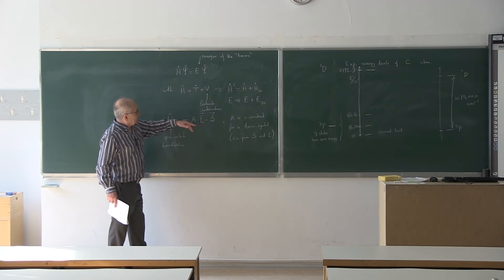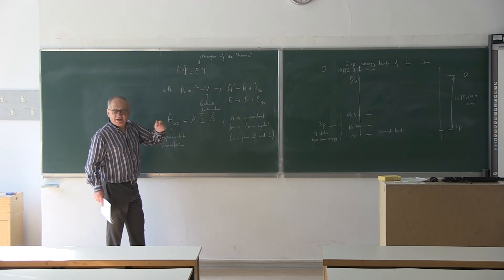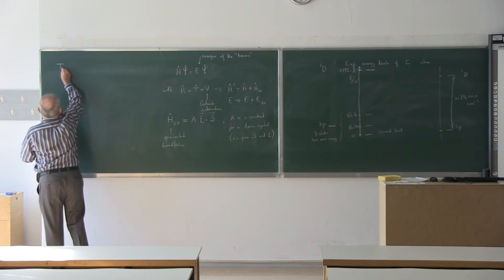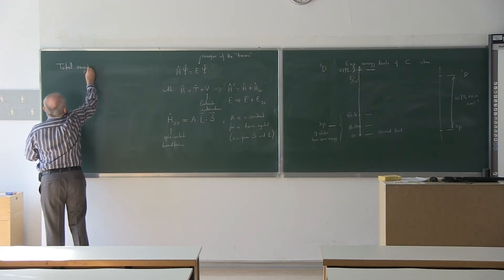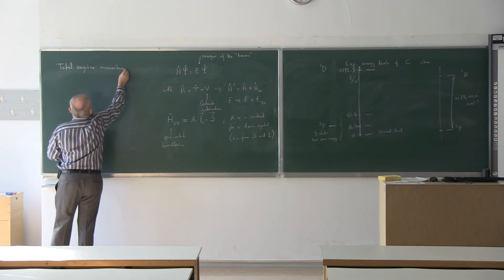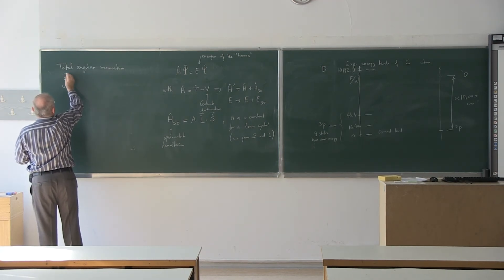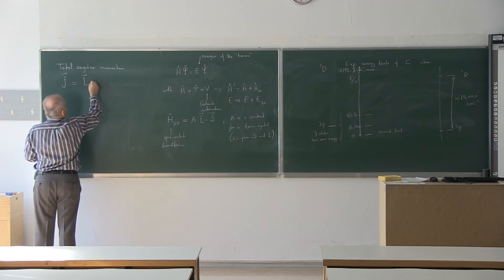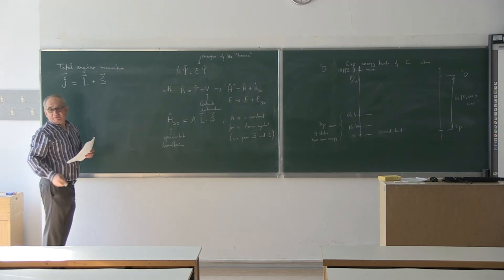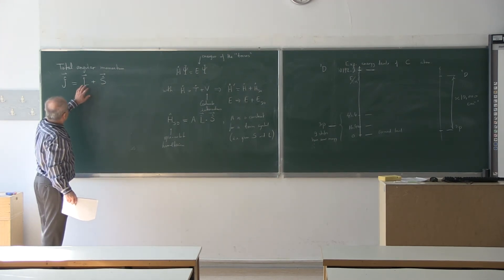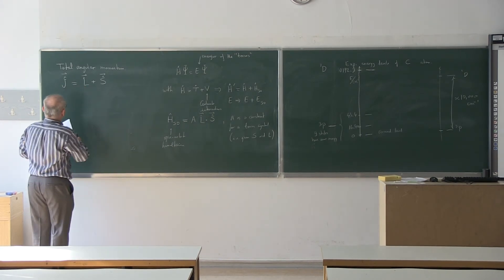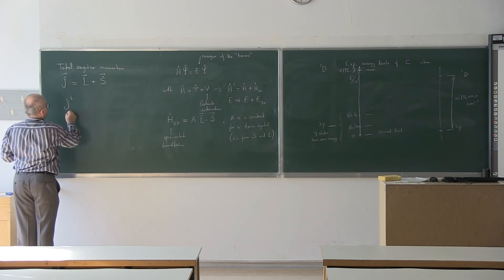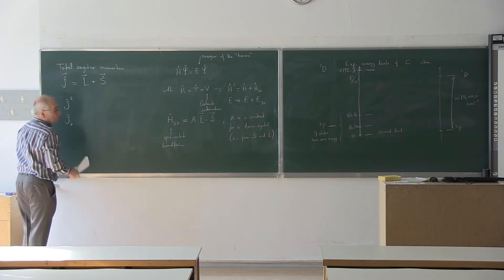To handle the spin-orbit interaction, we introduce the total angular momentum J, defined as the vector sum J = L + S. The important operators are J², J_z, L², and S². As a general rule, the z-component of any angular momentum commutes with the square of that angular momentum, and these four operators all commute with each other.